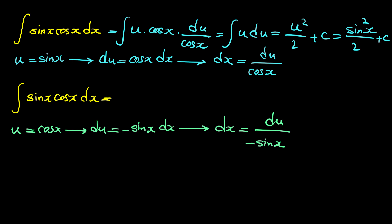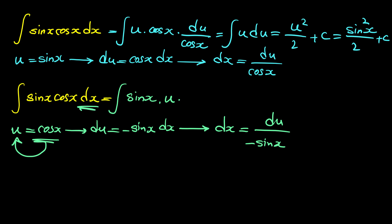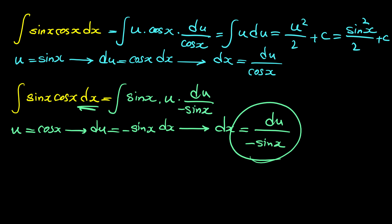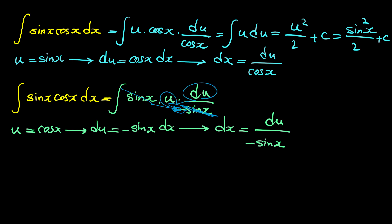This integral equals the integral of sine x times u — since cosine x is u — times dx, which is du over negative sine x. If we cancel sine x from the numerator with sine x in the denominator, we have negative u du.